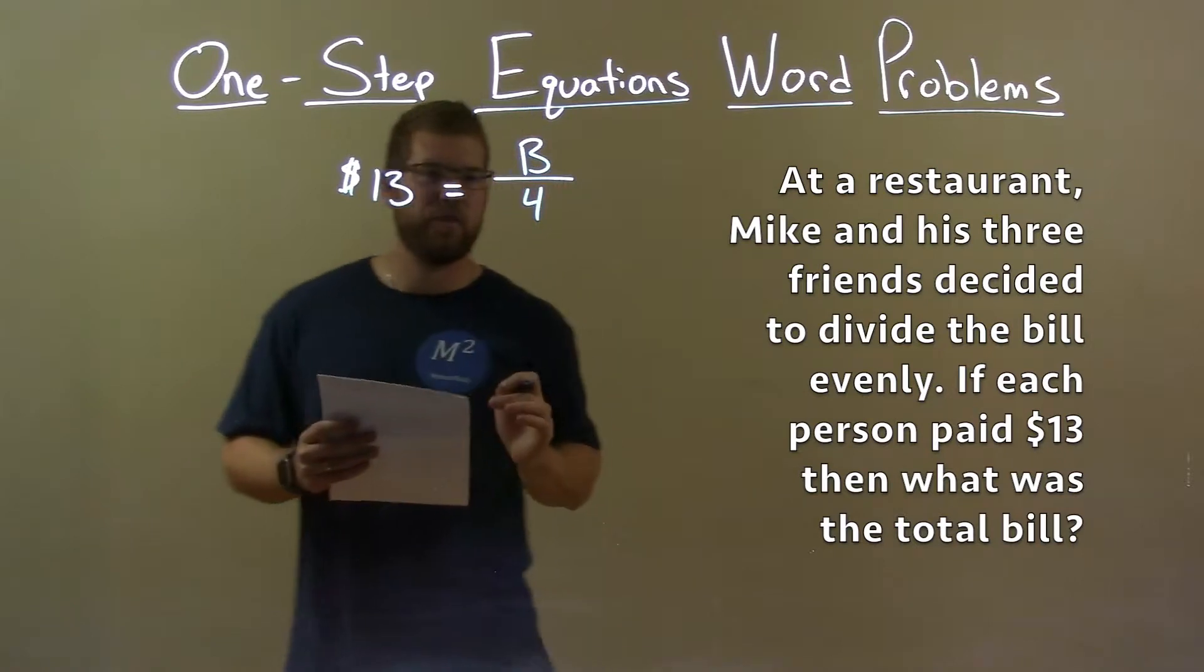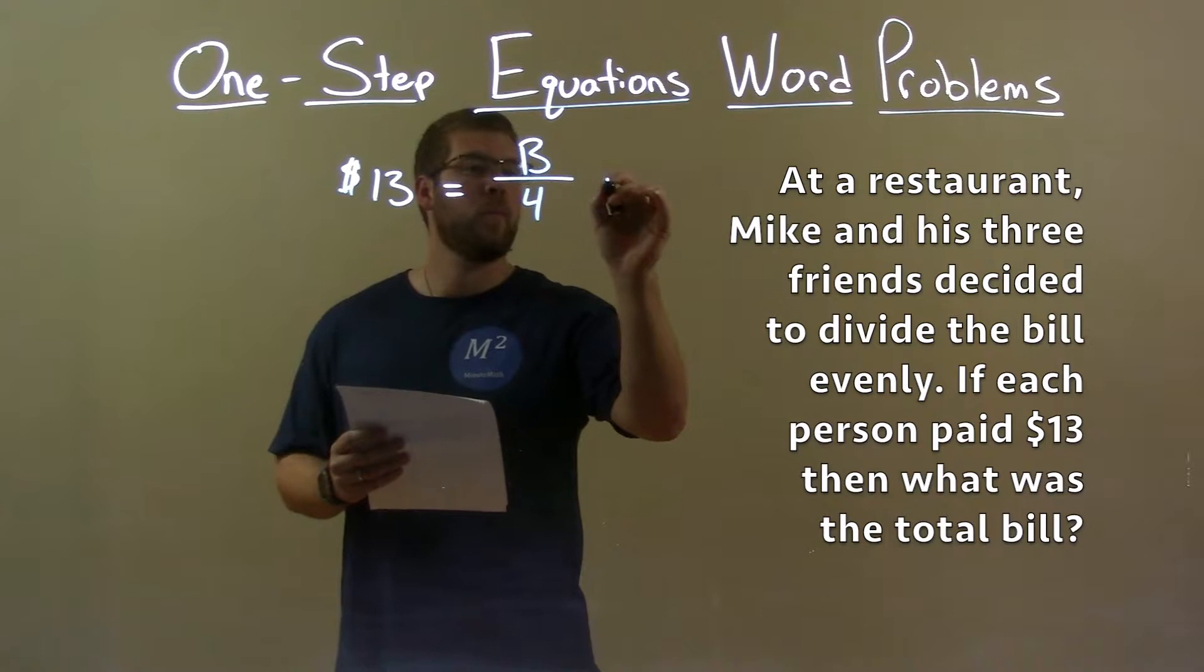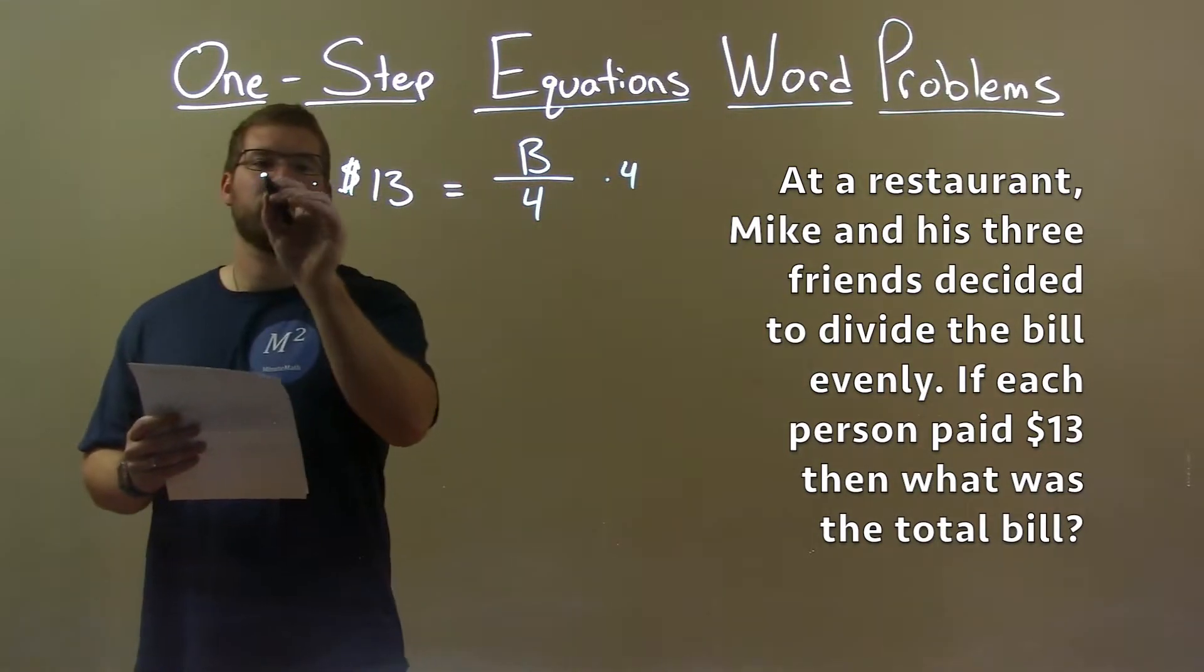So let's go solve this. Well we're divided by four. Opposite division is multiplication, so I'm going to multiply four to both sides.